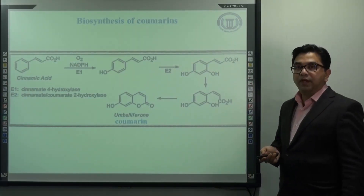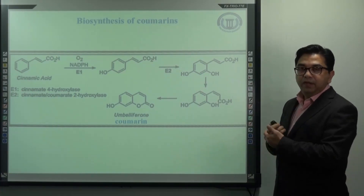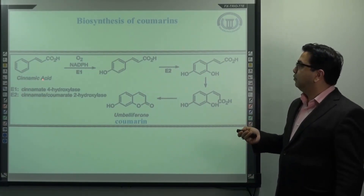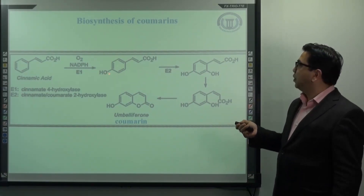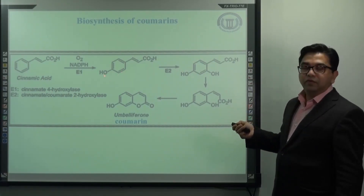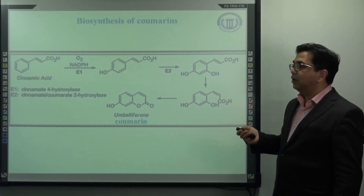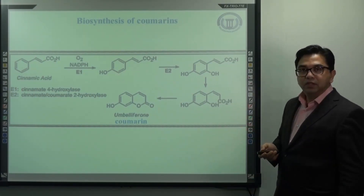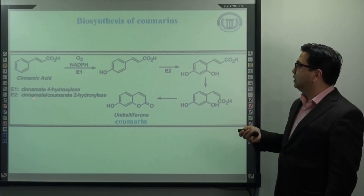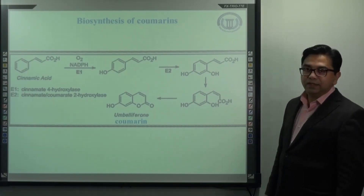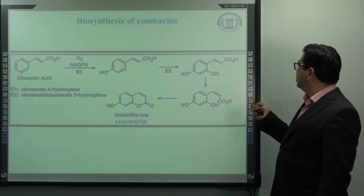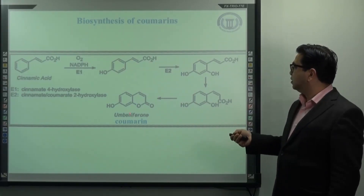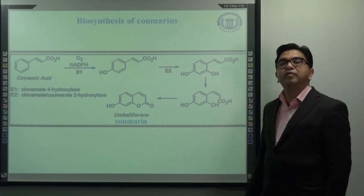Regarding the biosynthesis of coumarins, coumarins can be biosynthesized mainly from cinnamic acid. Cinnamic acid first undergoes hydroxylation at the para-position of the aromatic ring, in the presence of an enzyme known as cinnamate-4-hydroxylase. This further undergoes a second hydroxylation with the help of another enzyme known as cinnamate or coumarate-2-hydroxylase. Then it follows cyclization of the ring, which results in the formation of coumarin. The structure given here is nothing but the structure of umbelliferone, which is an example of coumarin.